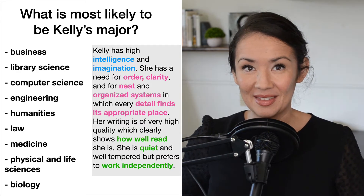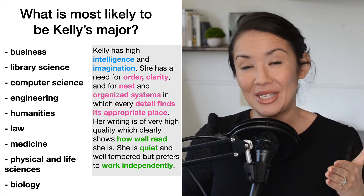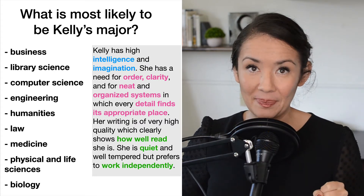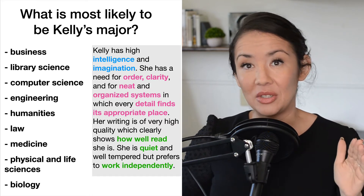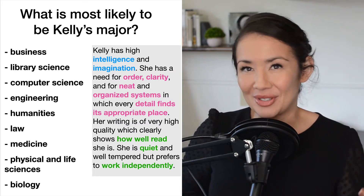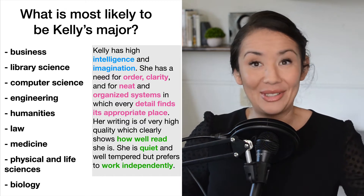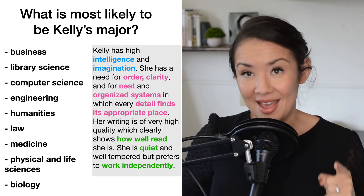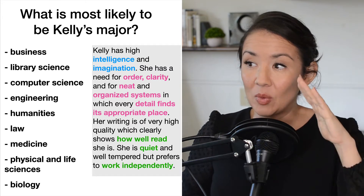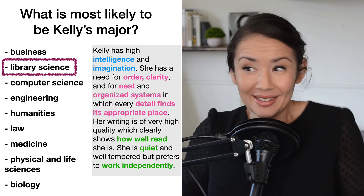What do you think? Interestingly, I would guess that you probably changed your prediction about what Kelly's major is from just guessing with no information to having more specific information about Kelly. What you probably did when you had no information is you picked the major that has the most people in it — maybe humanities, social sciences, or computer science. What I find in classes is that when people read this description, a lot of people, usually the majority, will say that she's likely a library sciences major.